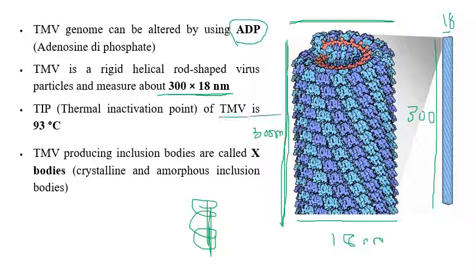The thermal inactivation point of TMV is 93 degrees centigrade — that is, to completely kill or inactivate the TMV virus particle, a temperature of 93°C is required. The inclusion bodies produced by TMV are called X-bodies, which are crystalline amorphous inclusion bodies.